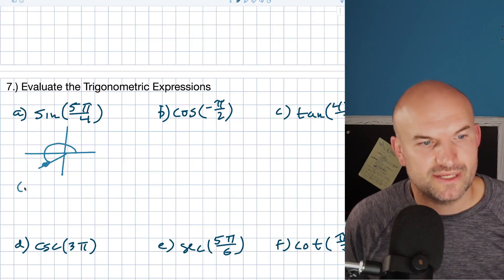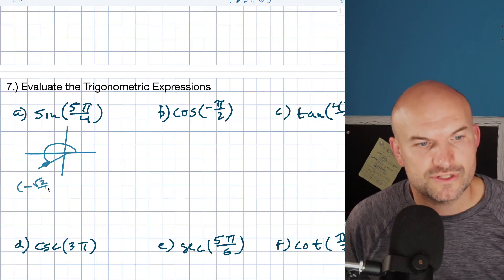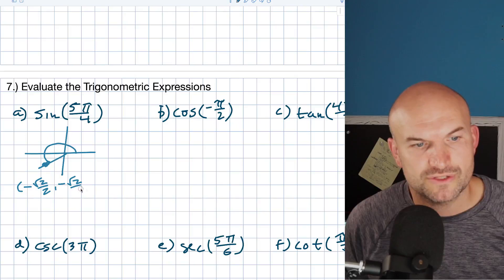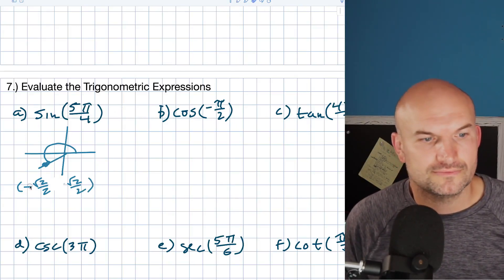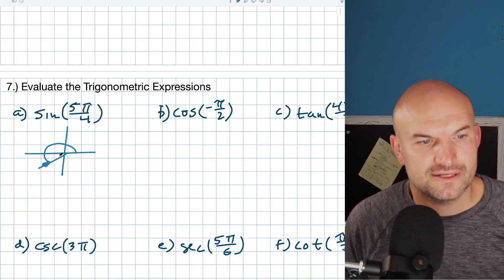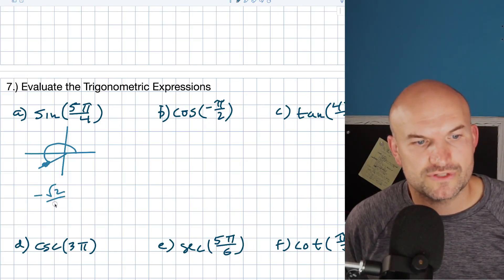There's the point right there and it's going to be a negative square root of 2 over 2 comma negative square root of 2 over 2. There you go. So, the answer here is a negative square root of 2 over 2.